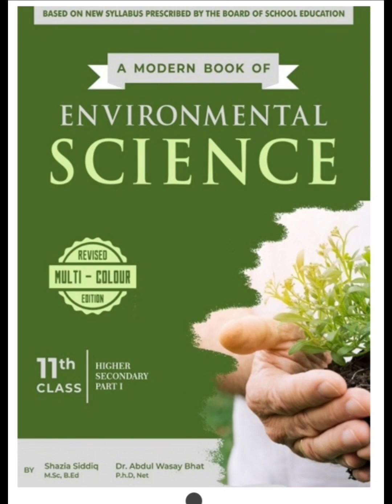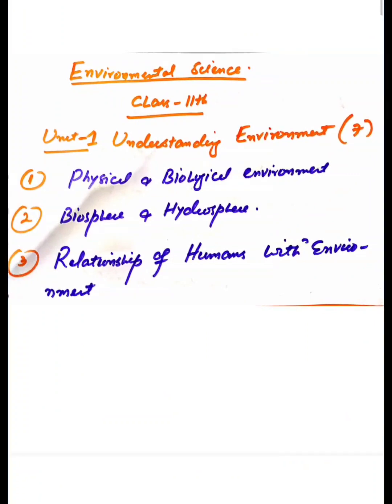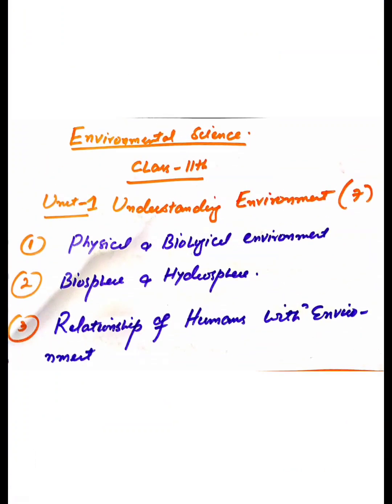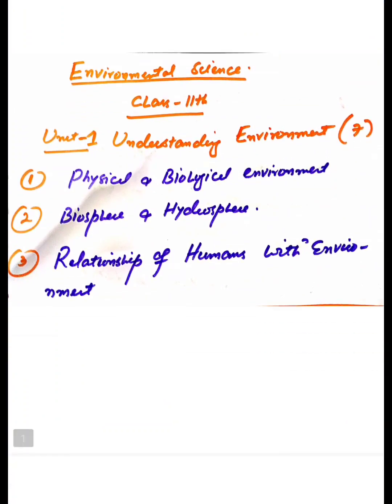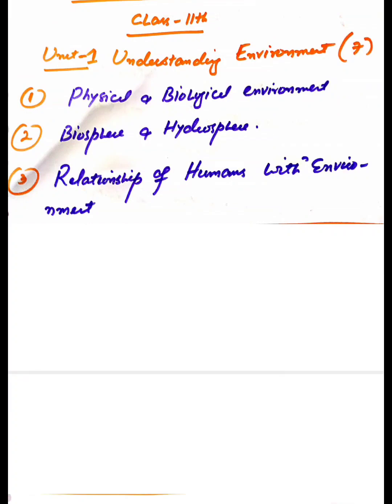So let us start with the important questions in this book. Unit 1 is Understanding Environment. First question is physical and biological environment. Second one is biosphere and hydrosphere, and third is the relationship of humans with environment.